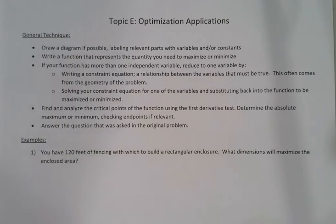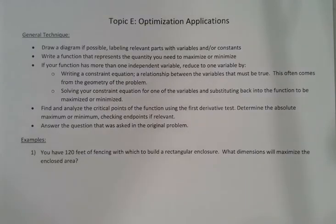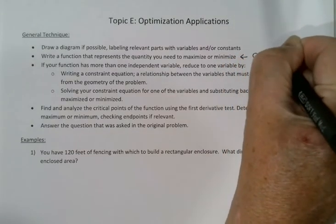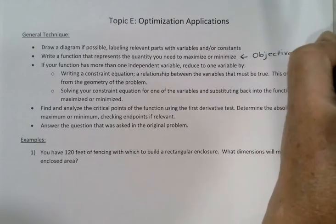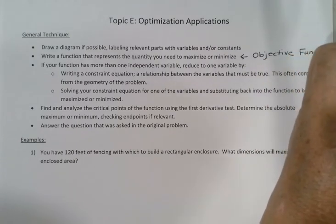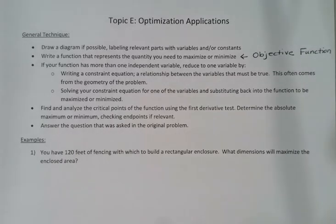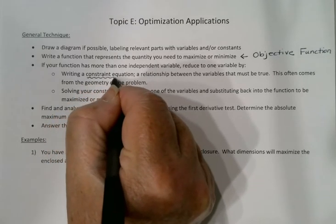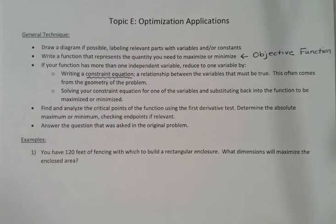We're then going to write a function that represents the quantity that we need to maximize or minimize. There's a name for this—it's called the objective function. If your function has more than one independent variable, we'll need to reduce that to just one independent variable. Typically we do this by looking for another relationship, called a constraint equation, an additional relationship that will allow us to solve for one variable in terms of the other and then substitute into the objective function.